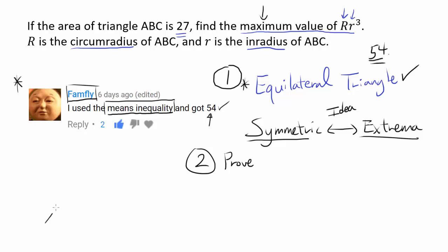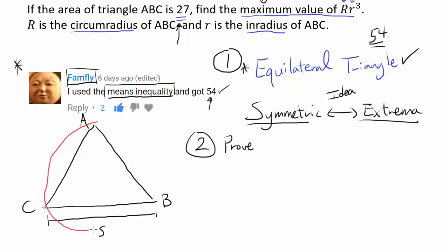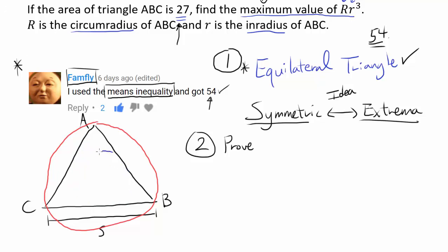Let me start by drawing out an equilateral triangle. I'll mark it A, B, C, with area 27 and side length s. We have the circumcircle going around — that's the circumcircle — and the incircle within, which touches all three sides. The inradius is lowercase r and the circumradius is capital R.